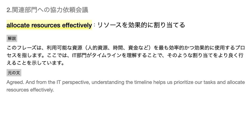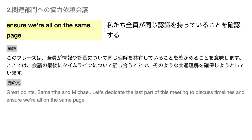Allocate resources effectively — このフレーズは、利用可能な資源、人的資源、時間、資金などを最も効率的かつ効果的に使用するプロセスを指します。ここでは、IT部門がタイムラインを理解することで、そのような割当をよりよく行えることを示しています。Ensure we're all on the same page — このフレーズは、全員が情報や計画について同じ理解を共有していることを確かめることを意味します。ここでは、会議の最後にタイムラインについて話し合うことで、そのような共通理解を確保しようとしています。